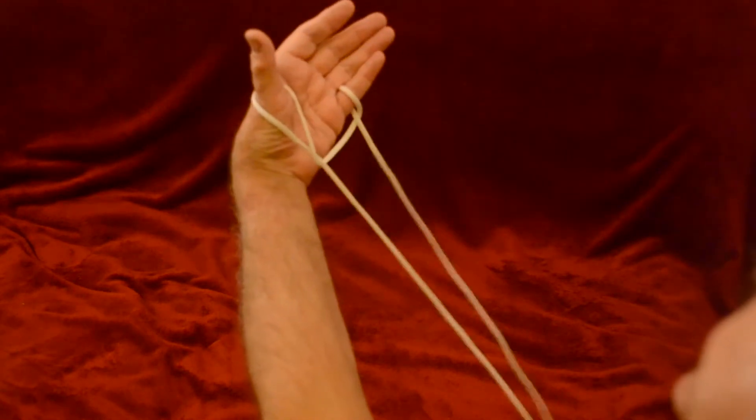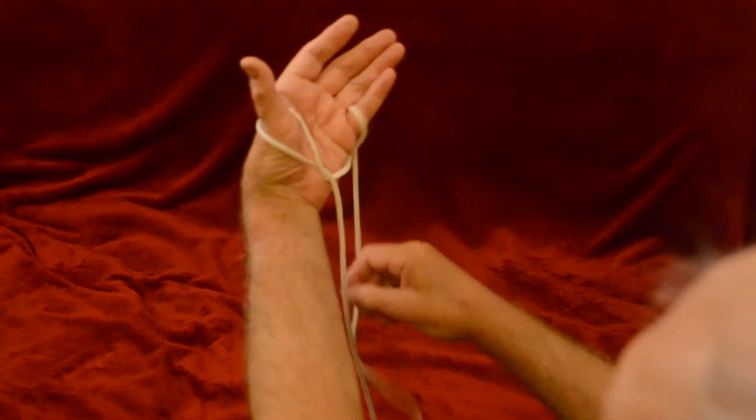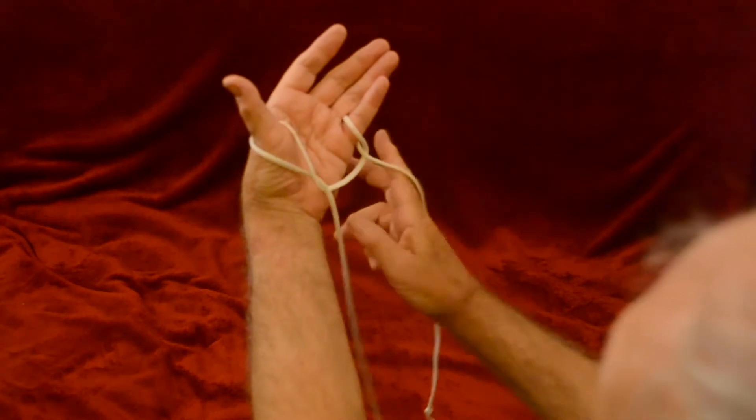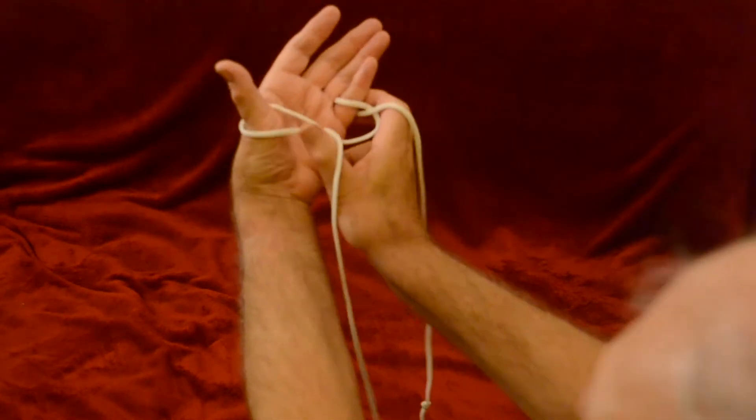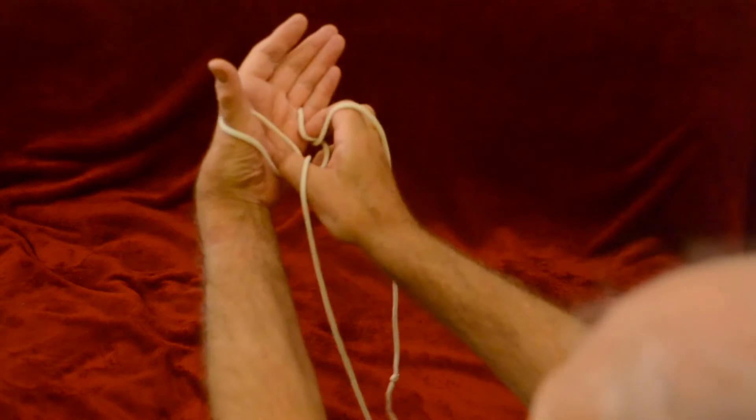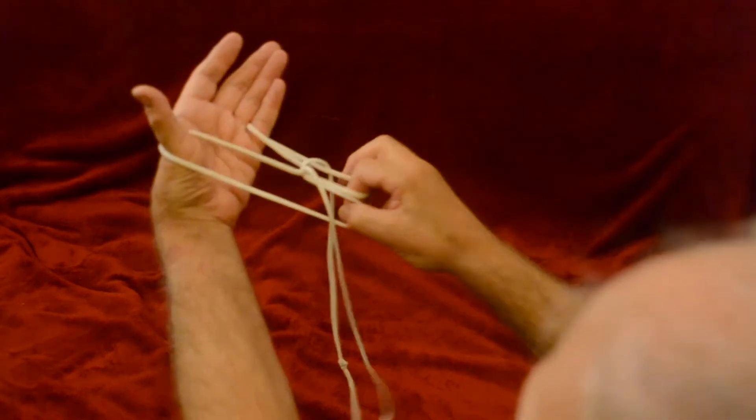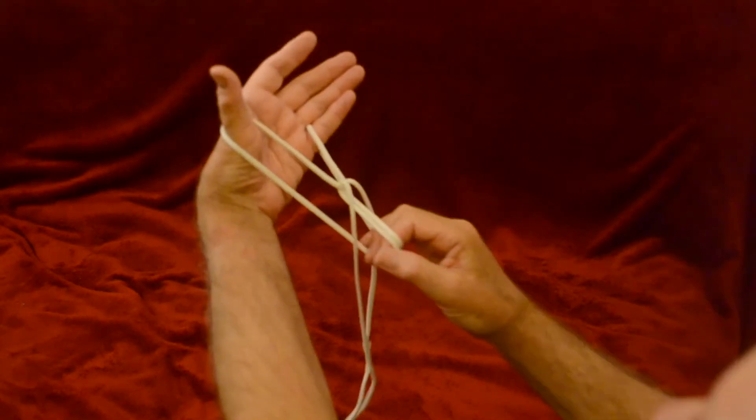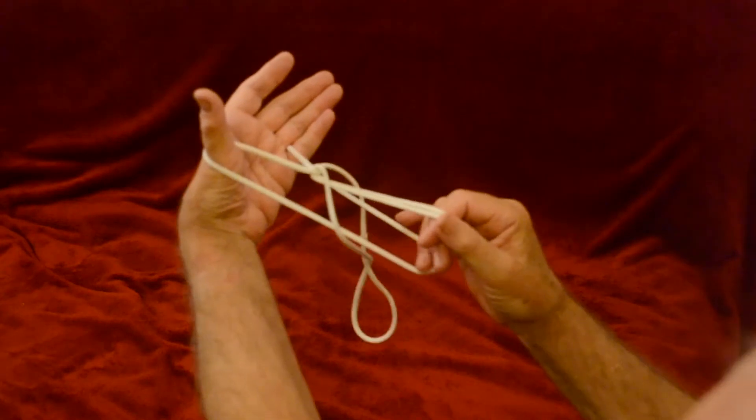So now you have a loop still, a little finger and thumb and a palm of string. This time the right hand goes through the loop and hooks the thumb into the near thumb string and the index finger into the far little finger string, and pull them down together.